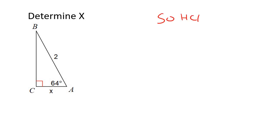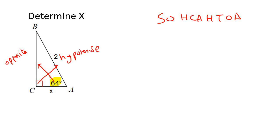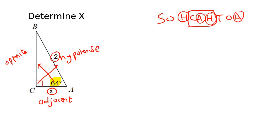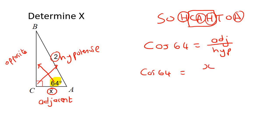Here's our next example. Start with SOH-CAH-TOA, go to the angle, and label everything. This is your opposite, the one opposite the 90 degree is your hypotenuse, and the other side is your adjacent. We have the hypotenuse and we're looking for the adjacent. So we use cos — cos of the angle, 64, equals to the adjacent over the hypotenuse, which is x over 2. Cross multiplication gives 2 cos 64 equals x, so x equals 0.88.